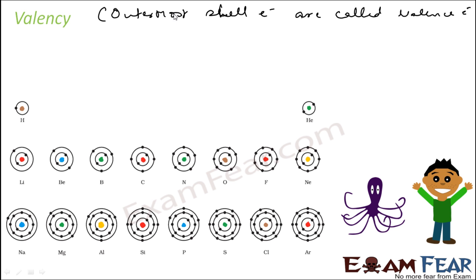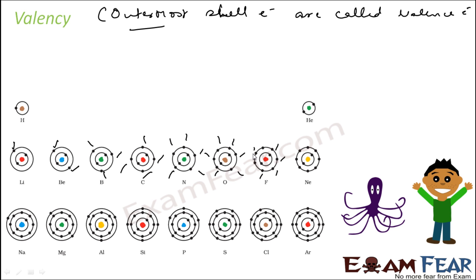For example, in the case of lithium, the outermost shell has 1 electron — that is called the valence electron. Carbon has 4 valence electrons. Nitrogen has 5 valence electrons. Oxygen has 6 valence electrons. Fluorine has 7 valence electrons. Neon has 8 valence electrons.